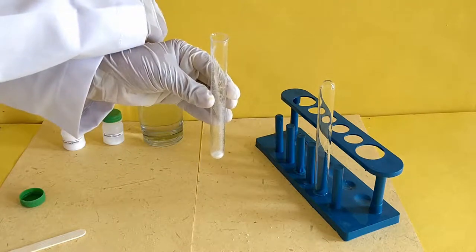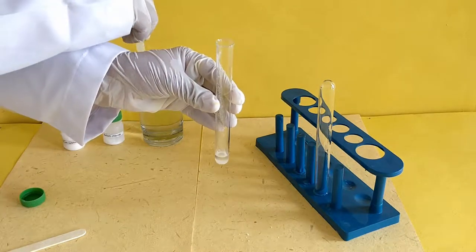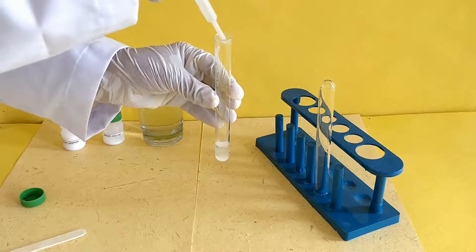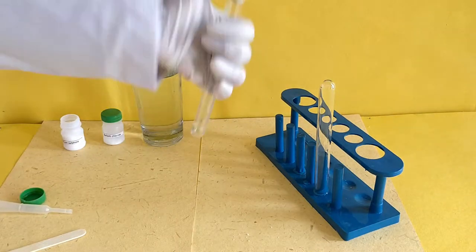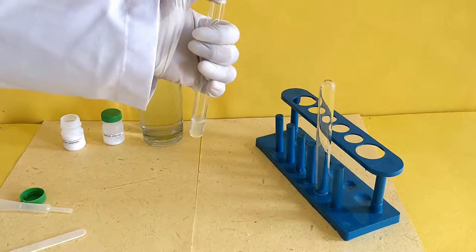Take about half a spatula of barium chloride in a test tube and fill it up to one-fourth full with water. Shake the test tube till the salt is dissolved to prepare an aqueous solution of barium chloride.